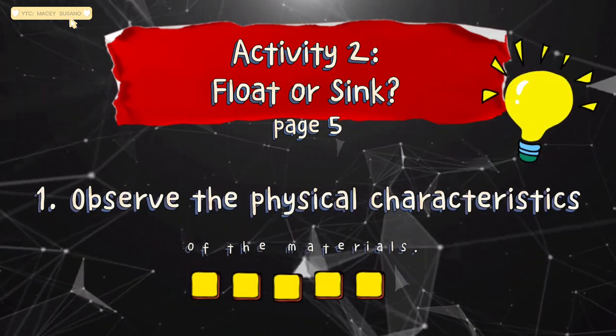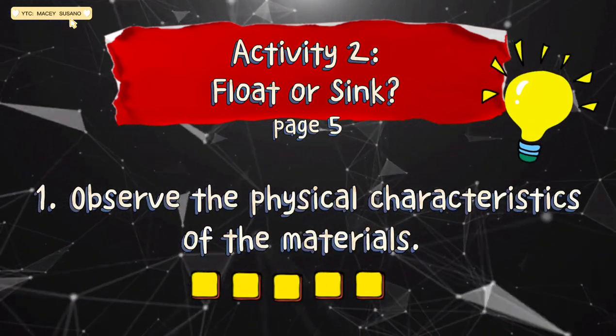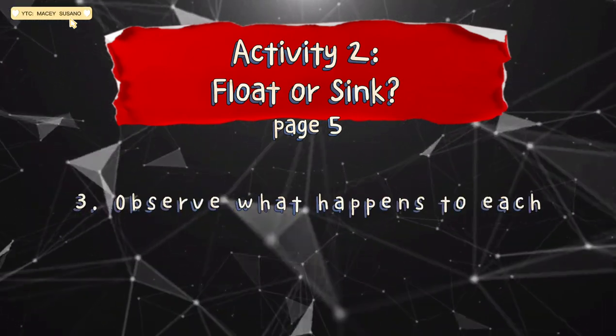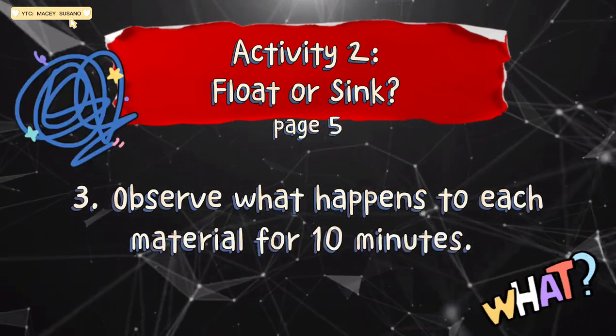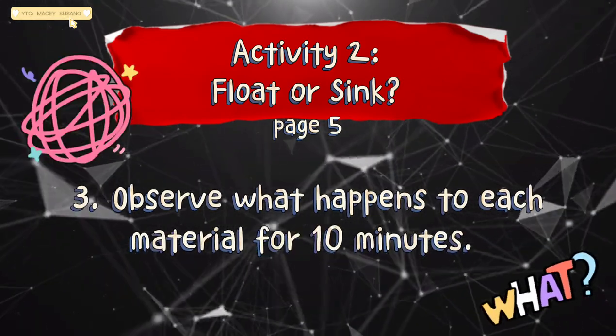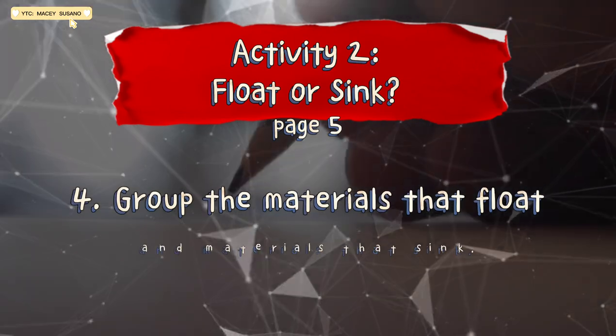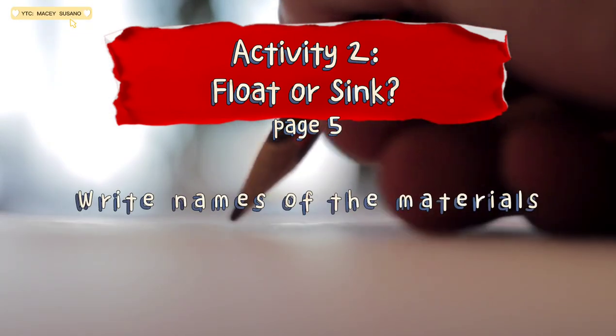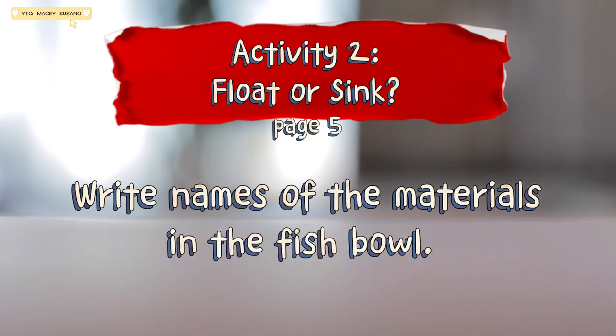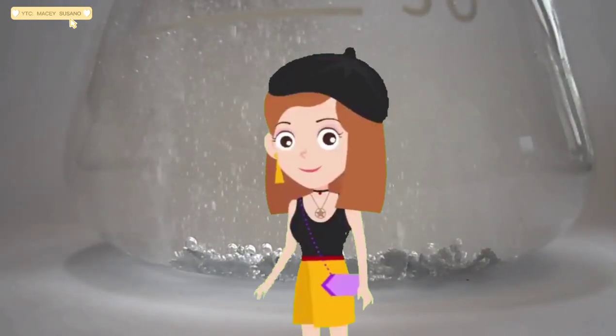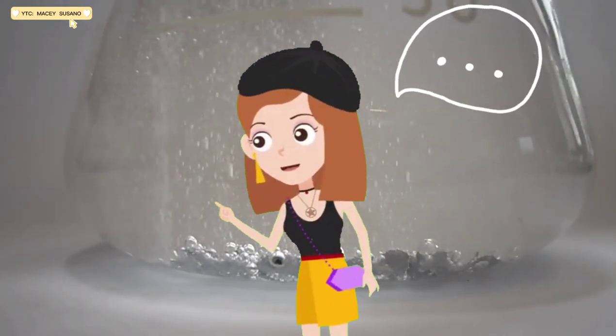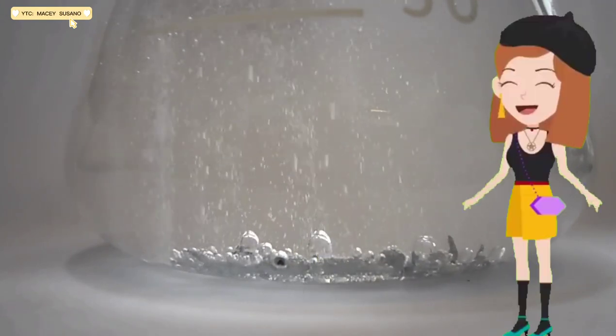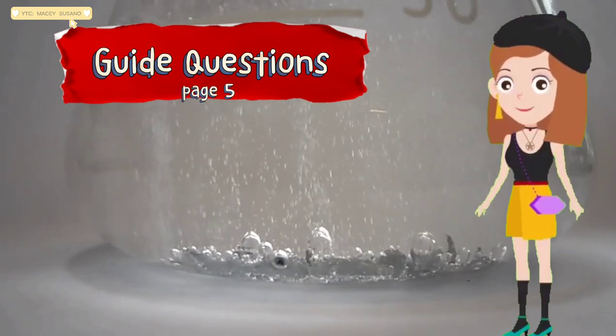Now, observe the physical characteristics of the materials. Drop the materials in the pail, half filled with water. Observe what happens to each material for 10 minutes. Group the materials that float and materials that sink. Write the names of the materials in the fish bowl. Are you done? How does it feel doing your second experiment? That's nice!